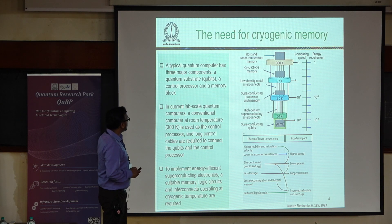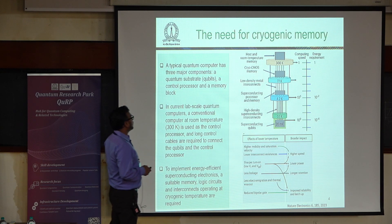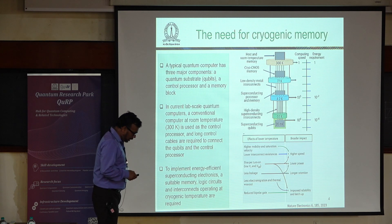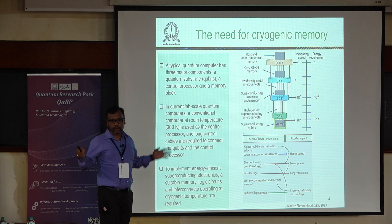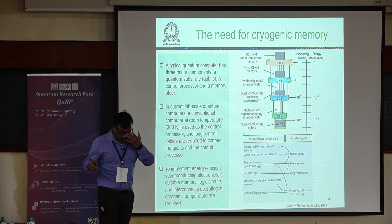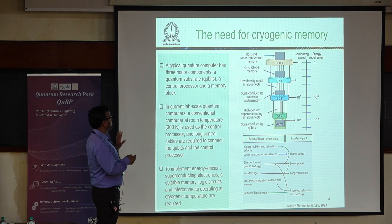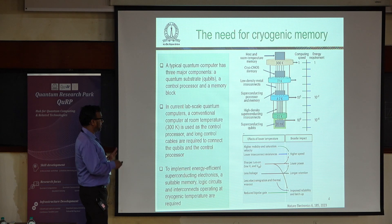Why do we need cryogenic memory? If you look at today's quantum computing systems, the major components are the quantum substrate — where you have qubits — and then the control processor and memory. Currently, these control processors and memory operate at room temperature.